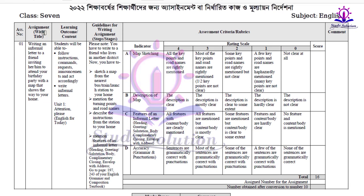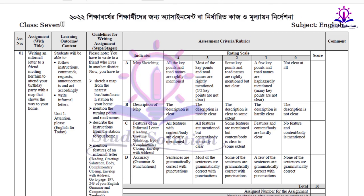So, let's go to assignment number 7, English class 7, subject English, assignment with title: writing an information letter to a friend inviting him or her to attend your birthday, with a map that shows the way to your home.